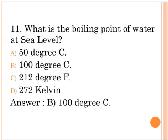Next question: What is the boiling point of water at sea level? A. 50 degrees Celsius, B. 100 degrees Celsius, C. 212 degrees, D. 272 Kelvin. The correct answer is option B, 100 degrees Celsius.